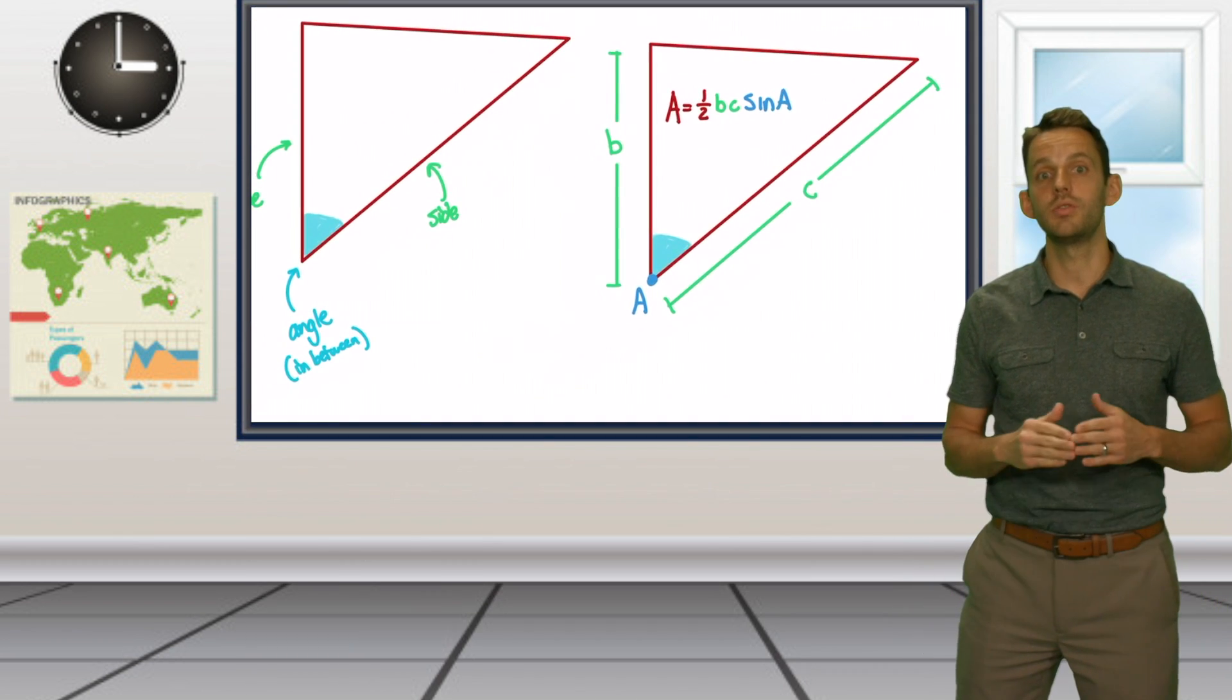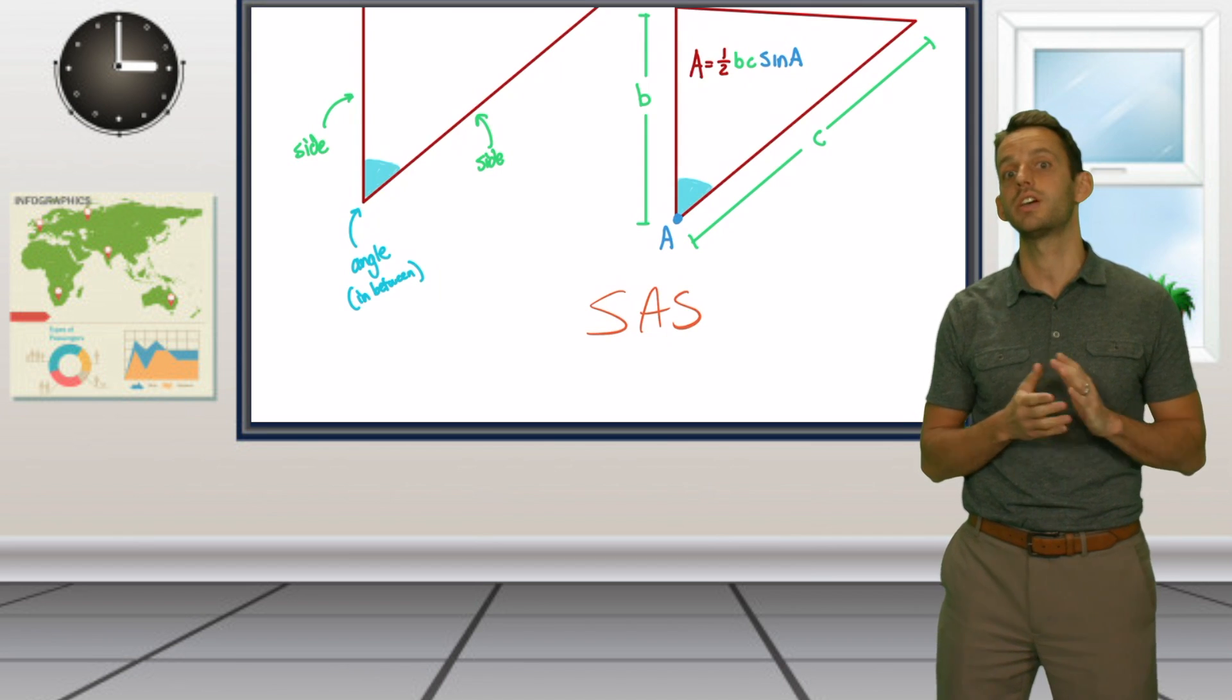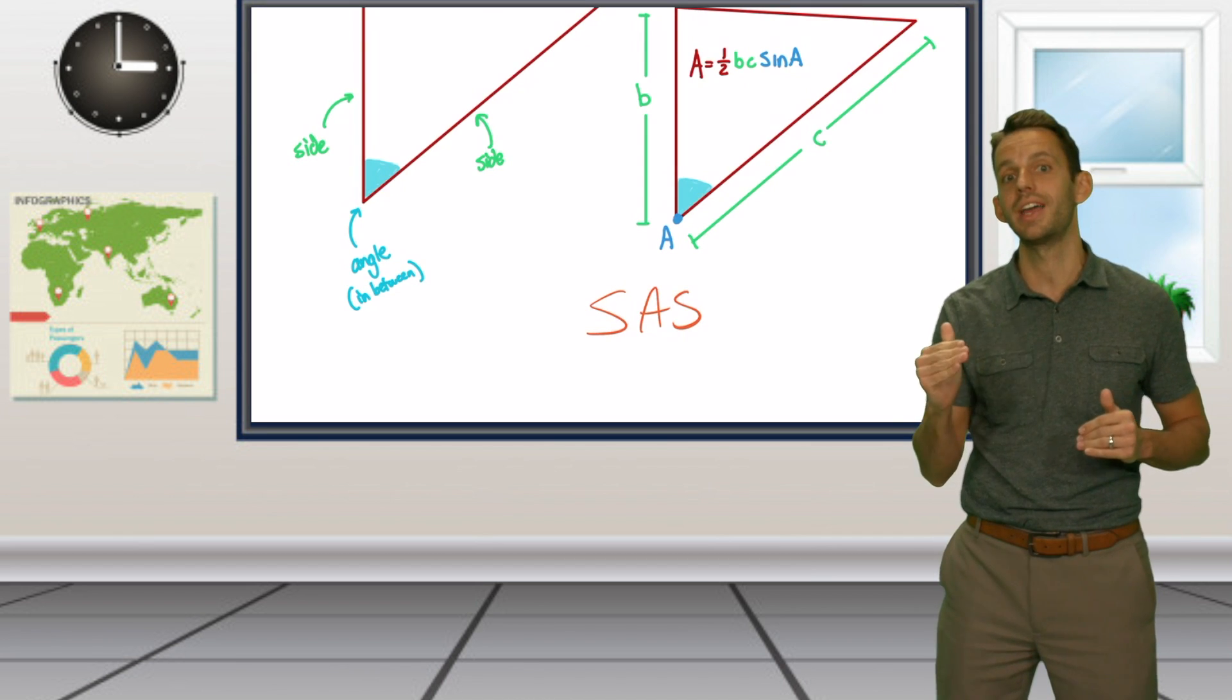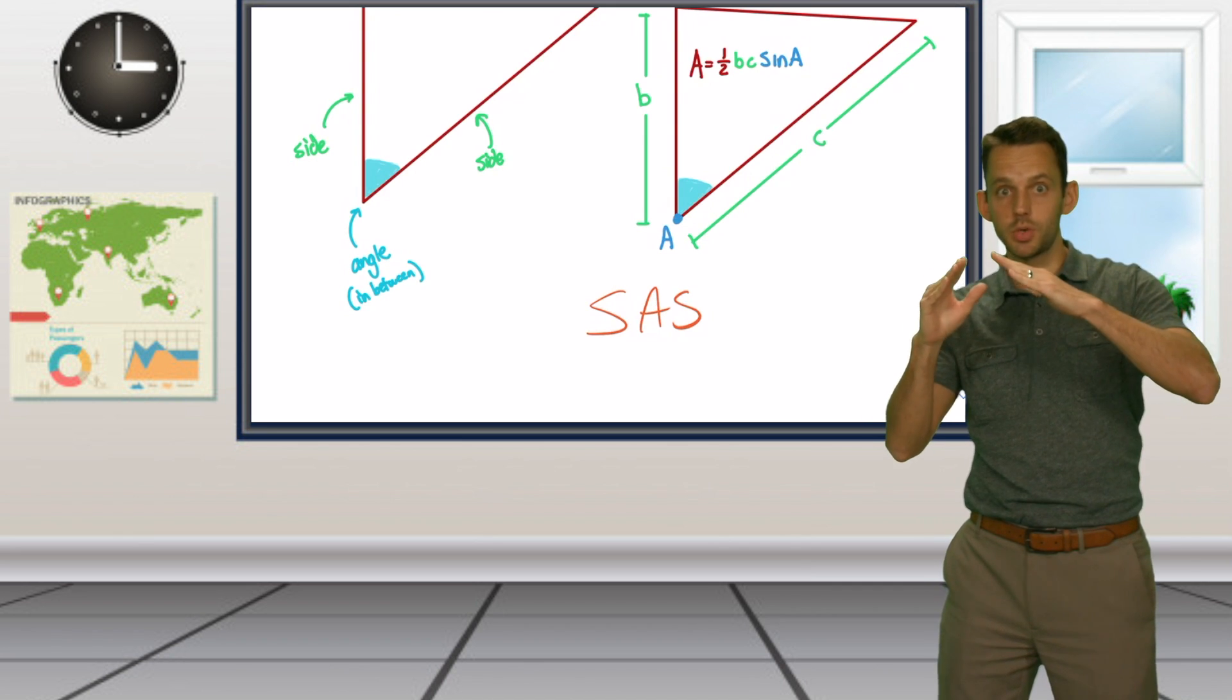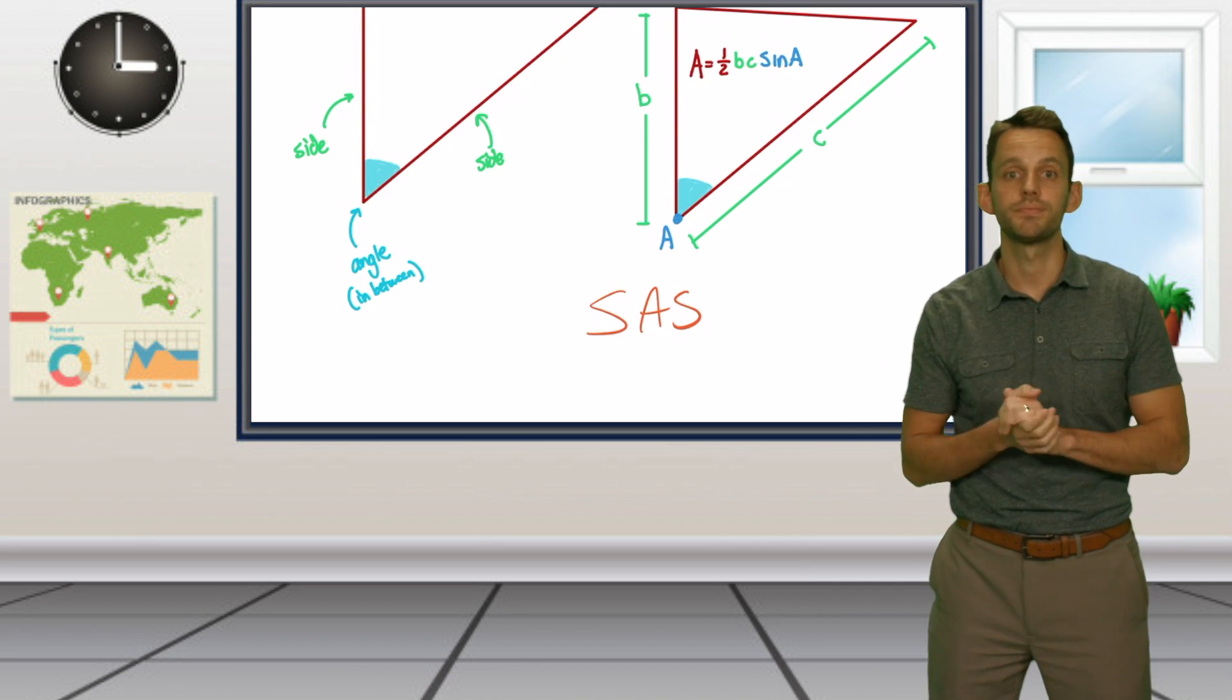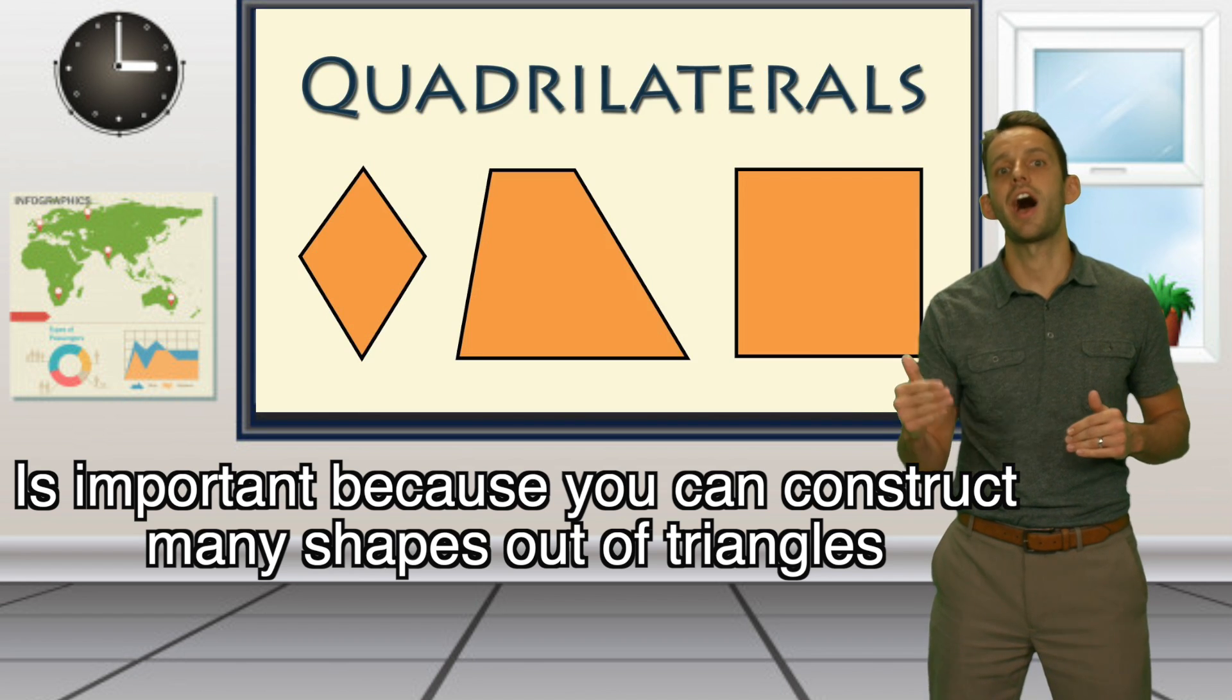This area formula using side angle side, or SAS, is extremely effective because you don't need a perpendicular height to one of the bases. You just need the sides of an angle in between, not just right angles either. The area of a triangle is important because we can construct many shapes out of triangles.